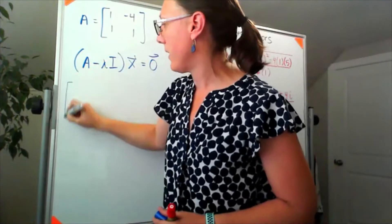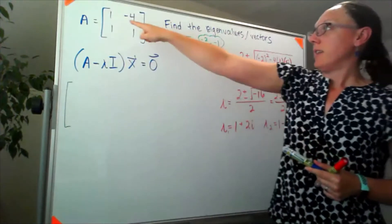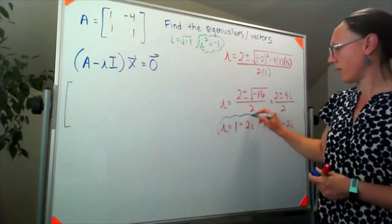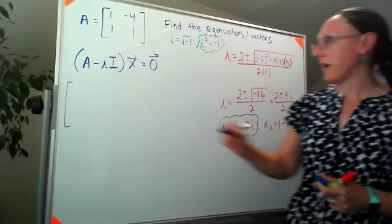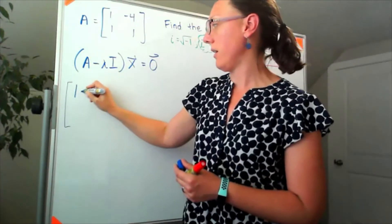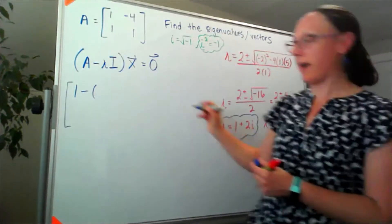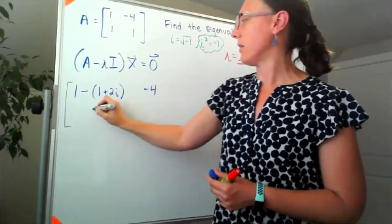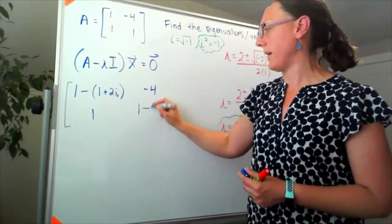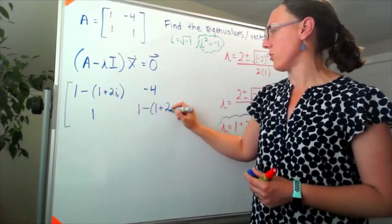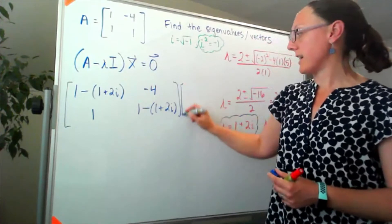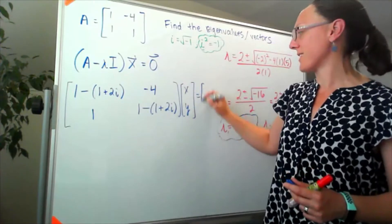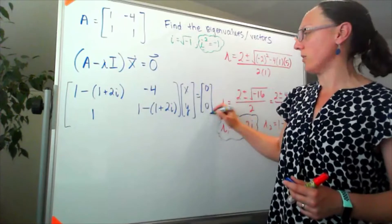So A minus lambda I for us, that means I'm going to have—let's look at lambda 1 first. So I'm going to have 1 minus 1 plus 2i, negative 4, 1, and 1 minus 1 plus 2i, and that times our vector x y, or x1 x2 if you like subscripts, has to be equal to the zero vector.